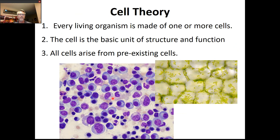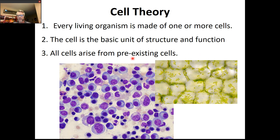That brings us to the cell theory, which is the basic idea pulled together from those observations. Three components: one, every living organism is made up of one or more cells — there are single-celled organisms and multicellular organisms like us. Two, the cell is the basic unit of structure and function in biology — it's the simplest thing you can have and still call it alive. Three, all cells arise from pre-existing cells, which begs the question of where the first cell came from — we'll discuss that in our evolution unit.